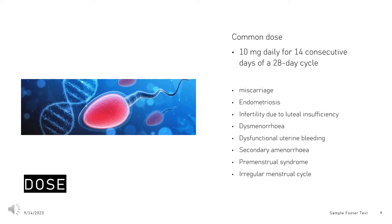Doses may be adjusted to 20 mg daily depending on clinical response, e.g., endometrial biopsy or ultrasound findings. Threatened Miscarriage (Adult): For cases associated with proven progesterone deficiency, initially up to 40 mg loading dose, followed by 10 mg every 8 hours until symptoms remit.